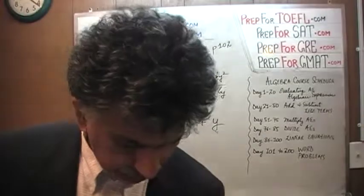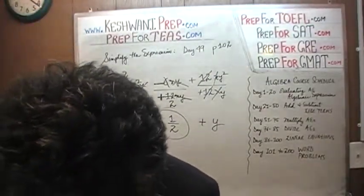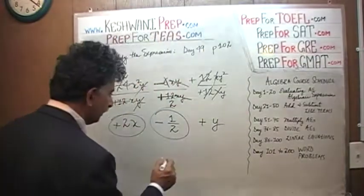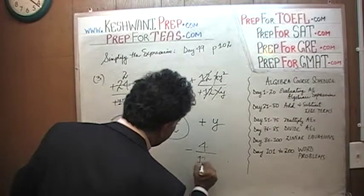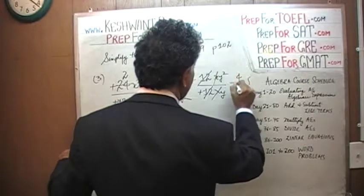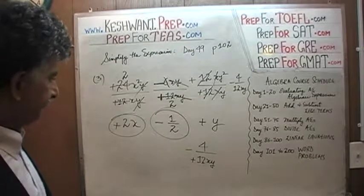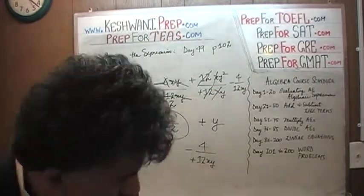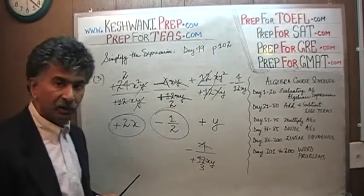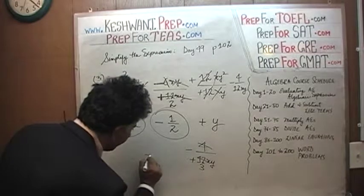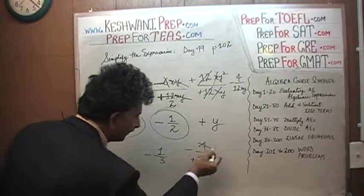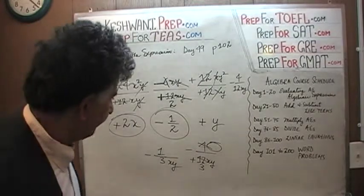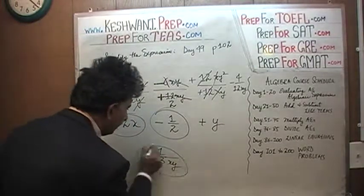Wait — I was being careless. There is a negative 4 at the end that I missed. We have one more term: negative 4 divided by positive 12xy. Dividing top and bottom by 4, the 12 becomes 3, so we get negative 1 over 3. And on top there is no x or y, so the final term is negative 1 over 3xy.